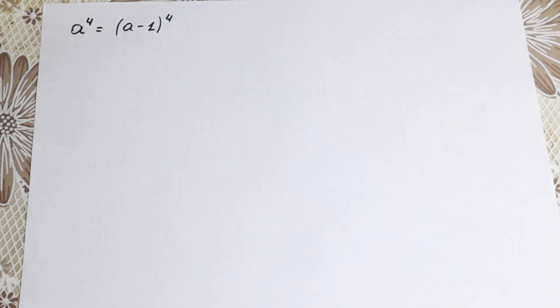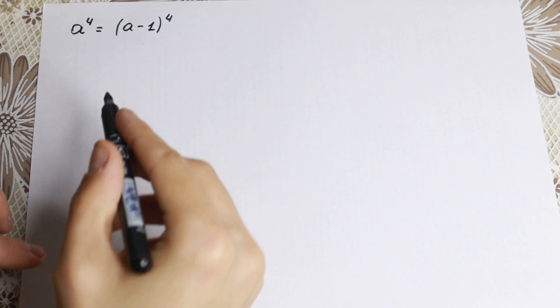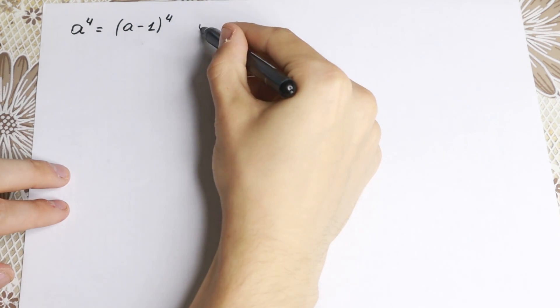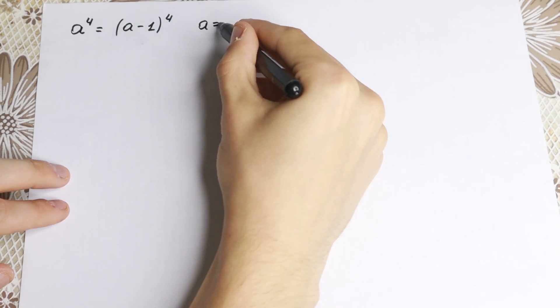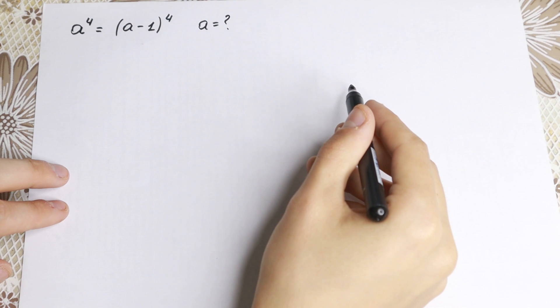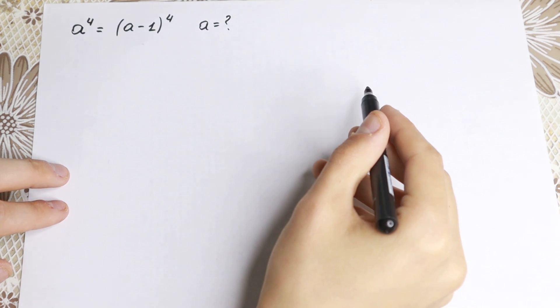Hello everyone! Happy to see you here — we have a really interesting math problem today. We have a to the fourth equal to a minus one to the fourth power, and we need to find a.